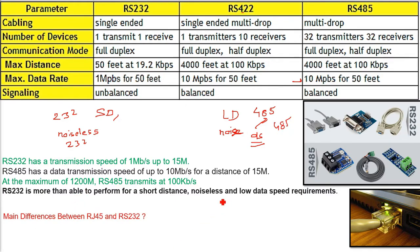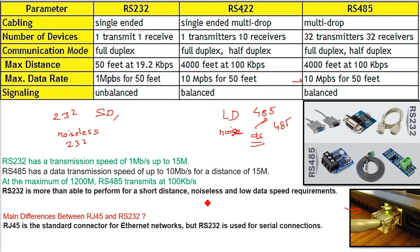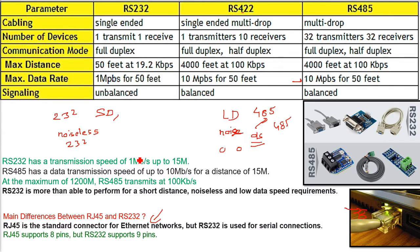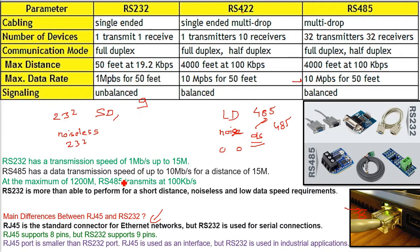A common question: what is the difference between RJ-45 and RS-232? RJ-45 is the standard connector for Ethernet networks. Ethernet is a protocol; RS-232 is not a protocol, it is a recommended standard. RS-232 is used for serial communication, while Ethernet is a protocol for LAN technologies. RJ-45 supports 8 pins; RS-232 has 9 pins. The RJ-45 port is smaller than the RS-232 port. RS-232 is mostly used in industrial applications.